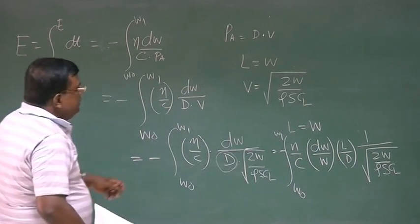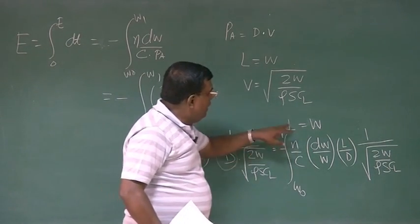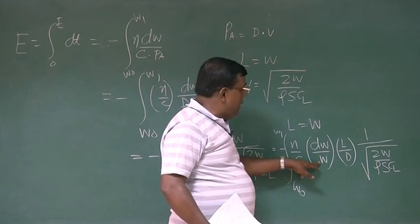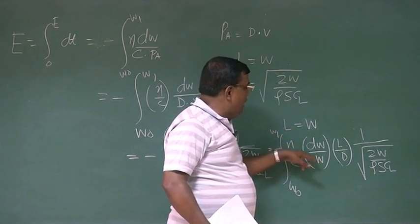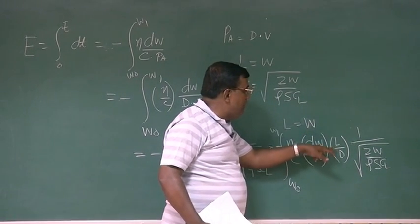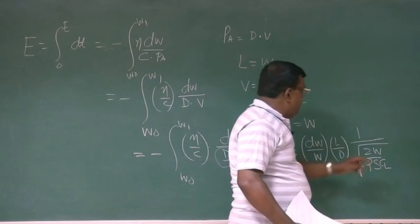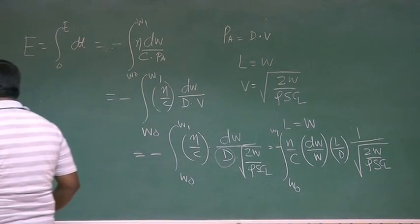What I have done? Since lift equal to weight, what I have done from here, I have added one W in the denominator. Since lift equal to weight, I have multiplied by lift. So expression is even same, but this has given me an advantage. I have got an expression for L by D and here also there is a CL sitting here.